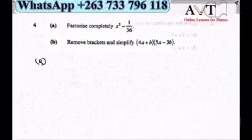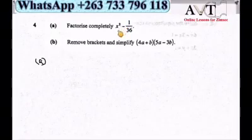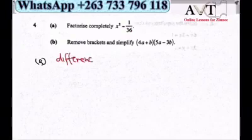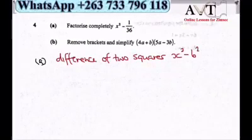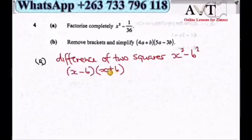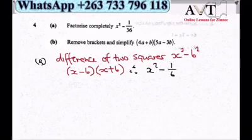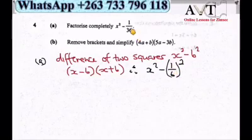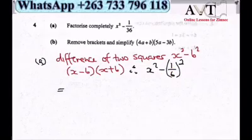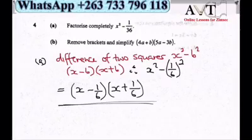Number 4a: factorize x squared minus 1 over 36. These are a difference of two squares. The formula is a squared minus b squared equals (a minus b)(a plus b). Here b must be the square root of 1 over 36, which is 1 over 6. So our expression factorizes to (x minus 1 over 6)(x plus 1 over 6).